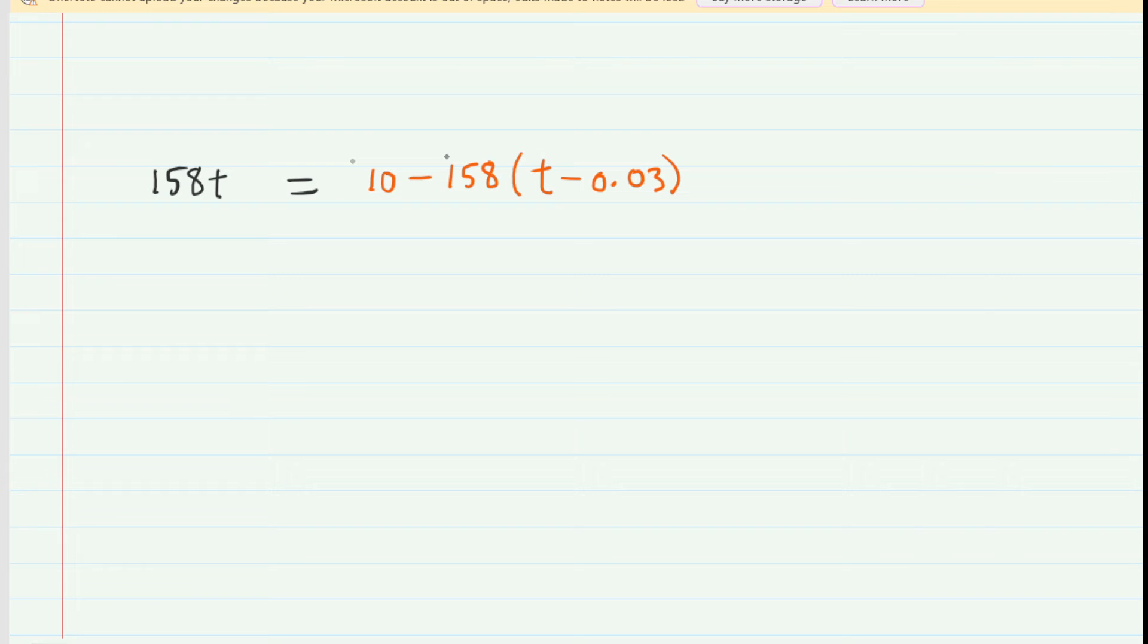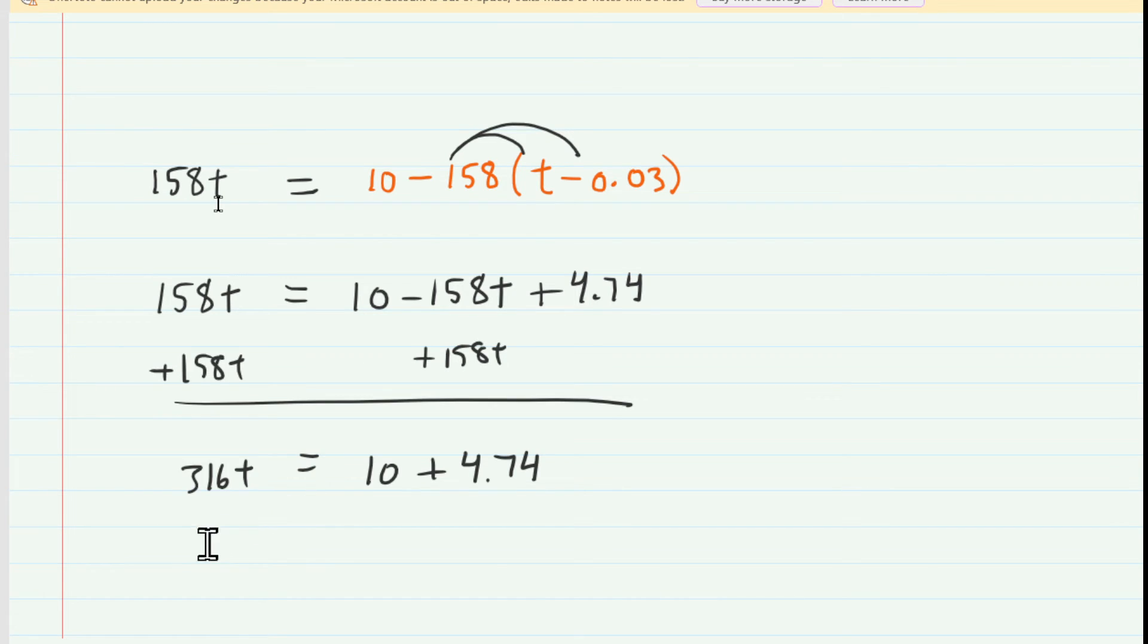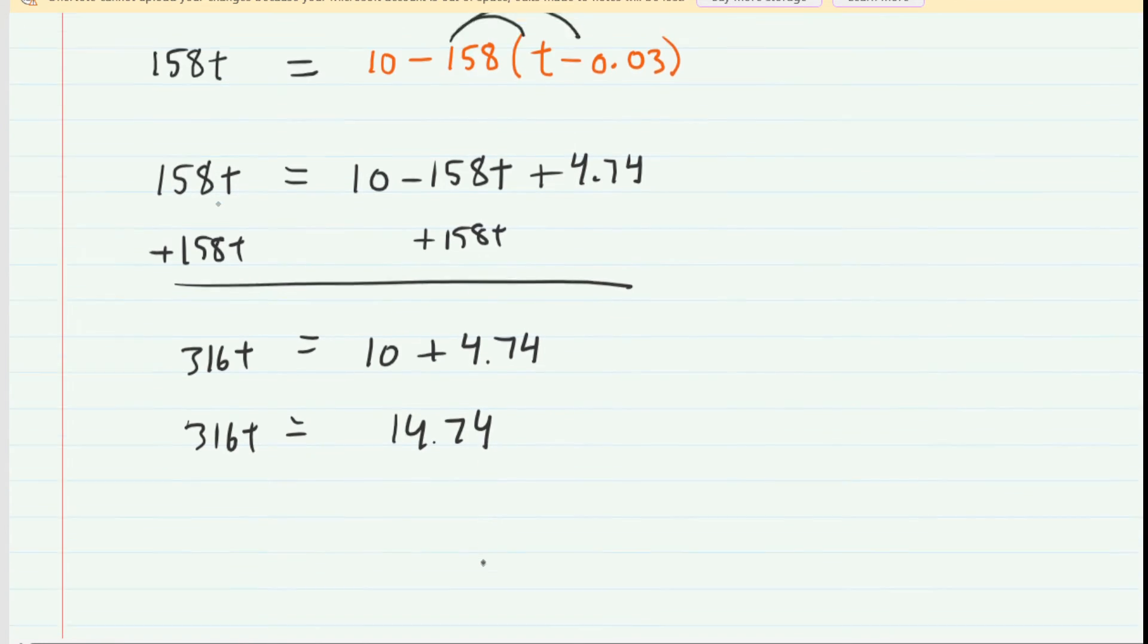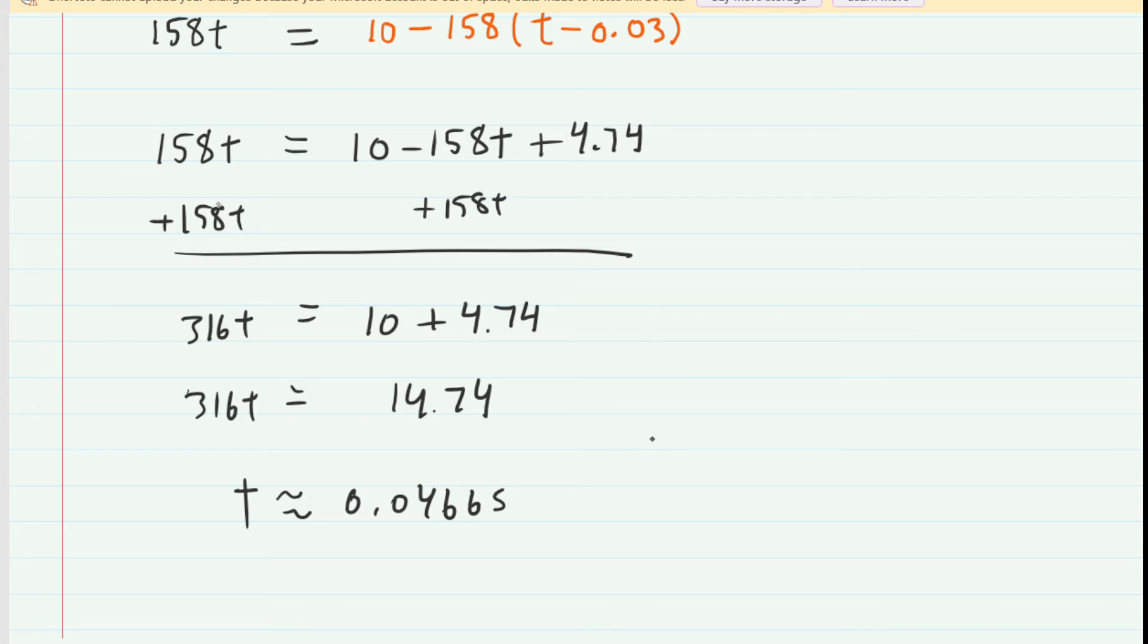Let's scoot down the page and do that. So we have a nice simple equation here that we can solve. We're going to distribute this negative 158 first. Next, we will add 158t to both sides. Combine the like terms on the right-hand side, and then we're going to end up dividing by the 316 to solve for time. We end up with a time at which these two pulses meet. It's about 0.05 seconds.